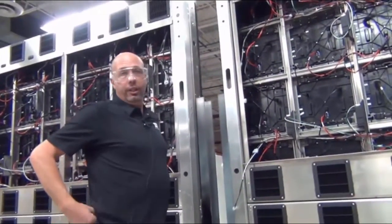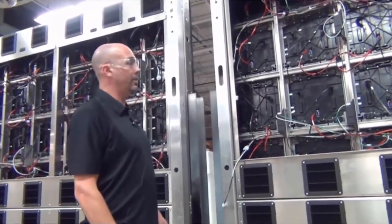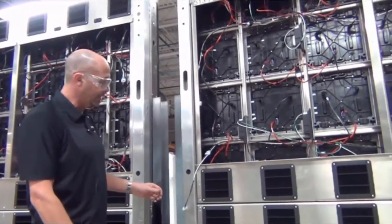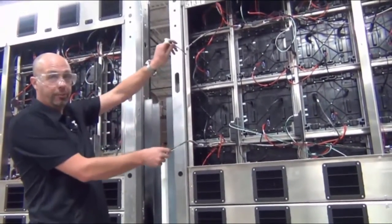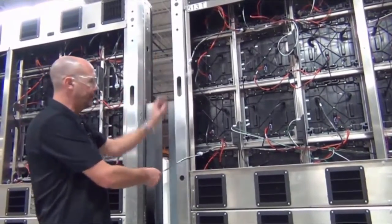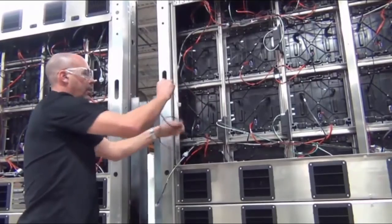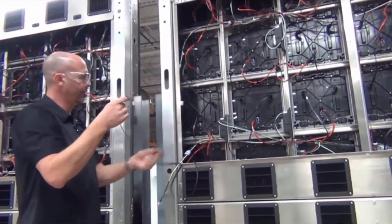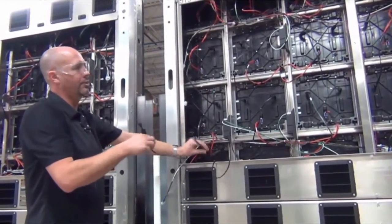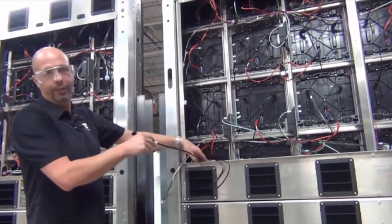When doing the power and signal interconnect between the top half, it's the same as the bottom. We'll have our two power jumpers that'll go between the cabinets and we'll have our one signal. In the top cabinets, we won't have a fiber optic jumper cable.